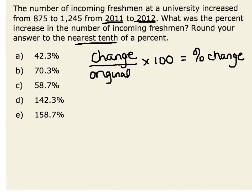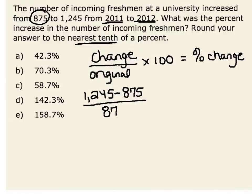Therefore, let's look at our change. Our change is our new value minus our original. Our new value is the number of students in 2012, which was 1,245. Take away the original value of 875 total incoming freshmen. Now we have the change. We're going to divide that result by our original, which is the number of incoming freshmen in 2011 — 875 students.